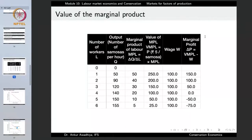The value of the marginal product of labor is computed as MPL × price. Here we take one samosa = 5 rupees because this is a competitive firm and it cannot change market prices. Whether it sells one samosa or 10,000, they will be sold for 5 rupees a piece. So the value of the marginal product of labor: MPL of 50 × 5 = 250; MPL of 40 × 5 = 200; 30 × 5 = 150; 20 × 5 = 100; 10 × 5 = 50; 5 × 5 = 25.